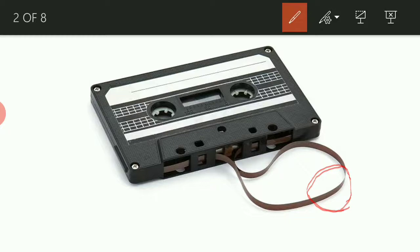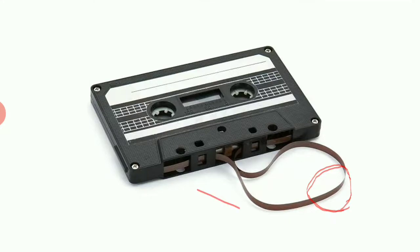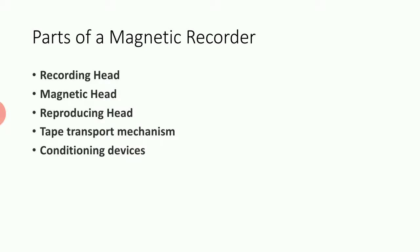This thin sheet of plastic actually contains a deposition of iron oxide or any other kind of magnetic material. The various parts of a magnetic recorder are a recording head, magnetic head, reproducing head, tape transport mechanism, and conditioning devices.